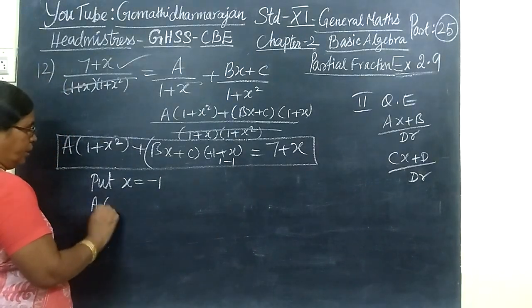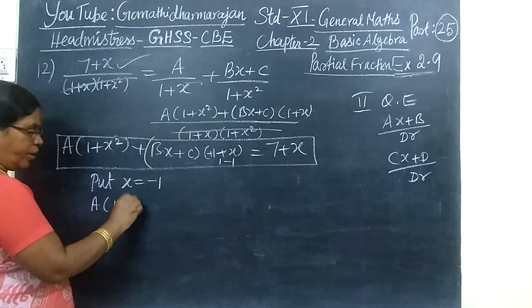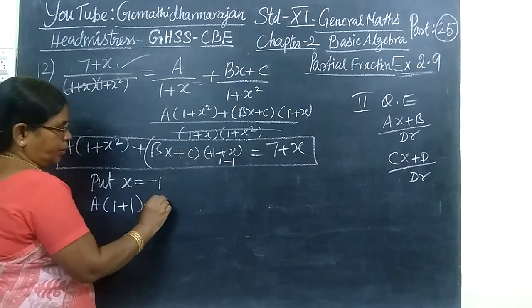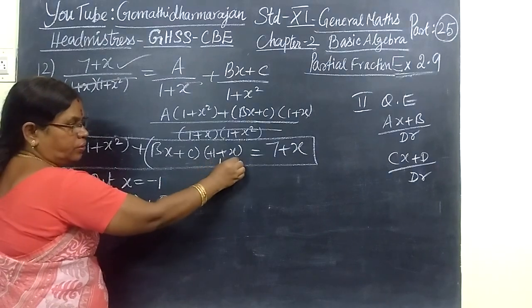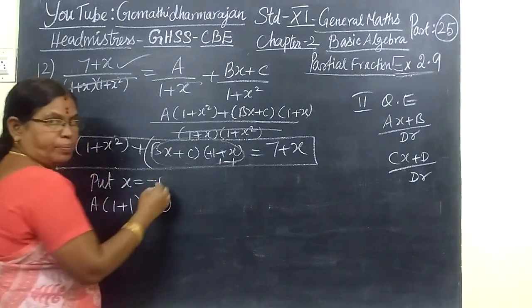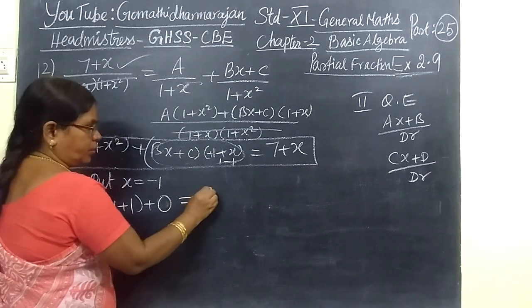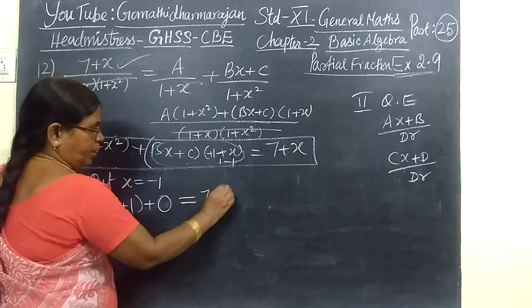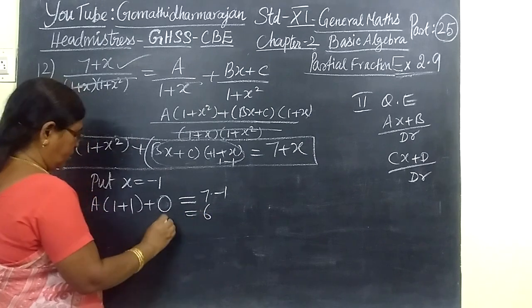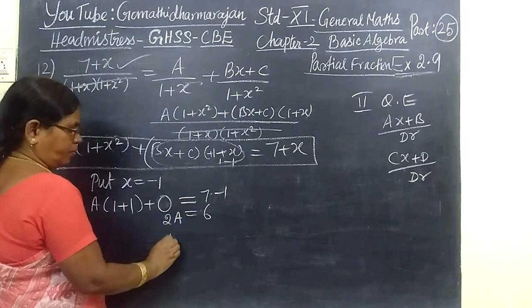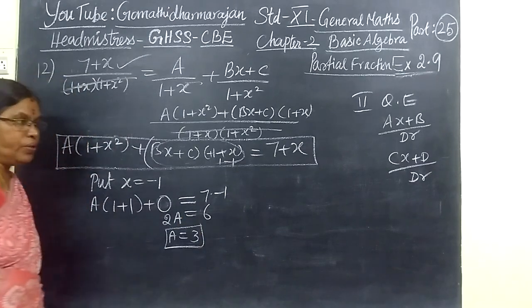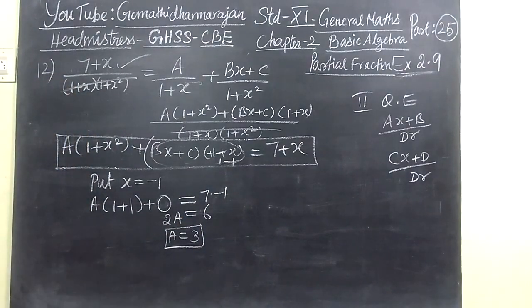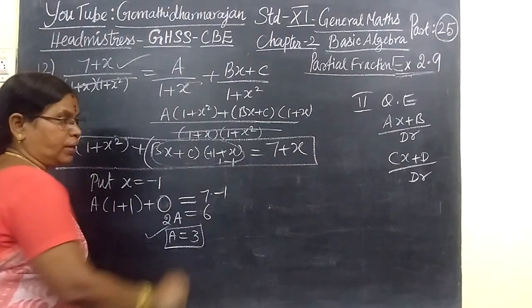So A bracket 1 plus minus 1 squared gives 1 times A. Then this becomes completely zero. This zero is completely zero. Equal to 7 plus minus 1. So this is equal to 6. Therefore 2A equal to 6, so A equal to 3. Before that we check the answer for that. Here A equal to 3, so this one is correct.